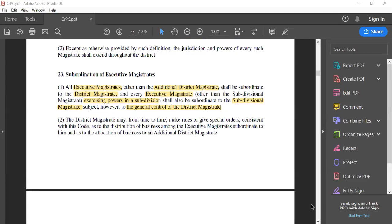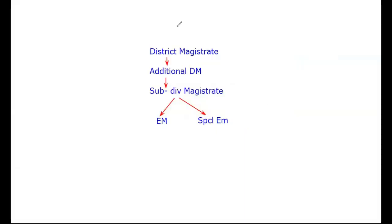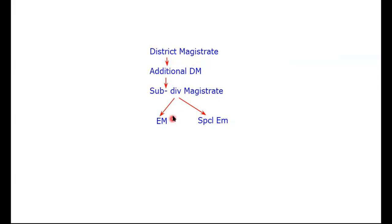Referring back to the hierarchy flowchart: the District Magistrate is at the top, and everyone within — Additional DM, Subdivisional Magistrate, Executive Magistrate, and Special Executive Magistrate — is under the general control of the District Magistrate. Under Section 23(2), it is the District Magistrate who assigns duties and appoints businesses to all magistrates subordinate to him.